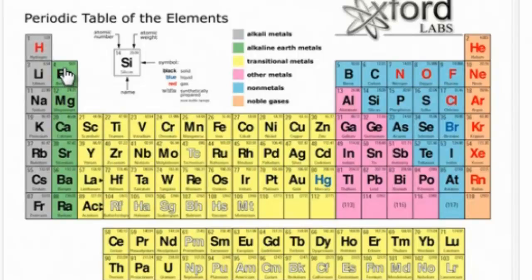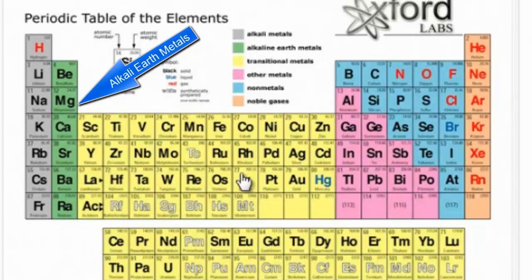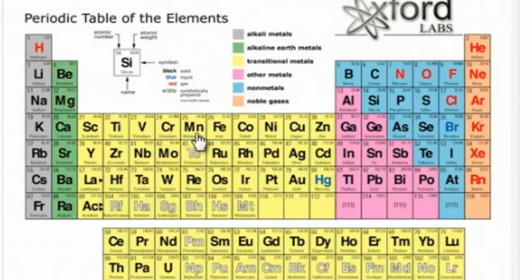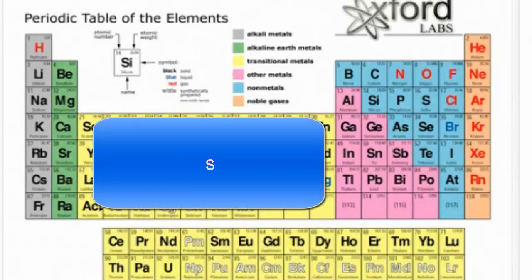Group 2A are called the alkali earth metals. The elements in the middle region here are called the transition metals.